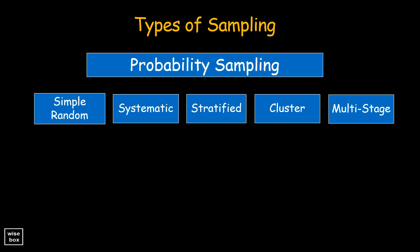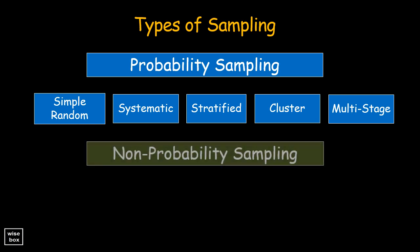The next type of sampling is the non-probability sampling. It does not involve random selection and methods are not based on the rationale of probability theory.